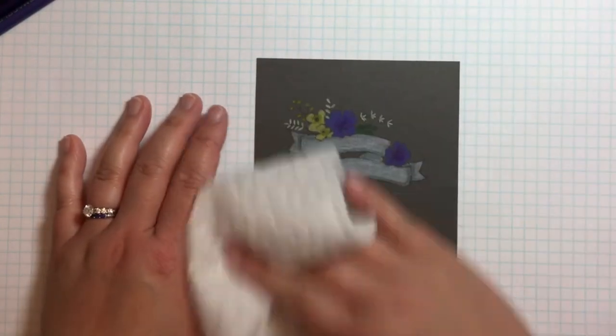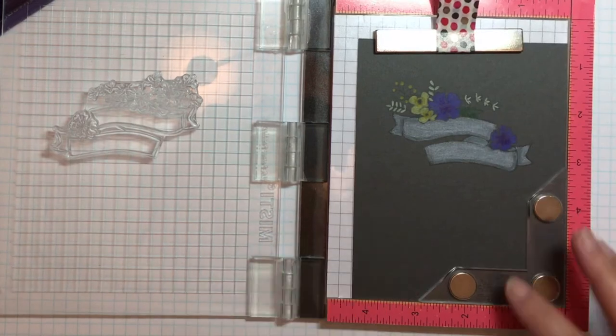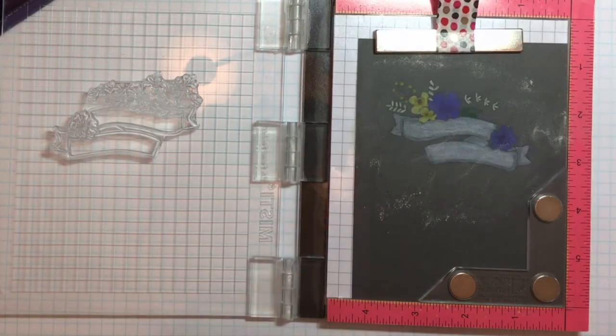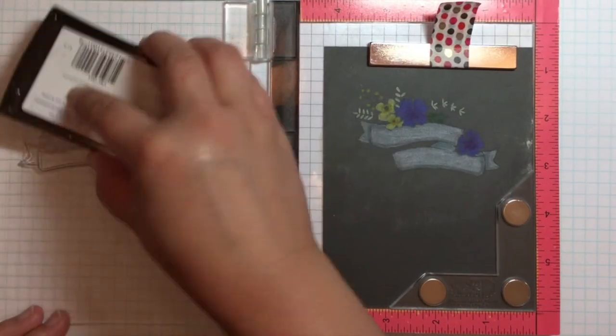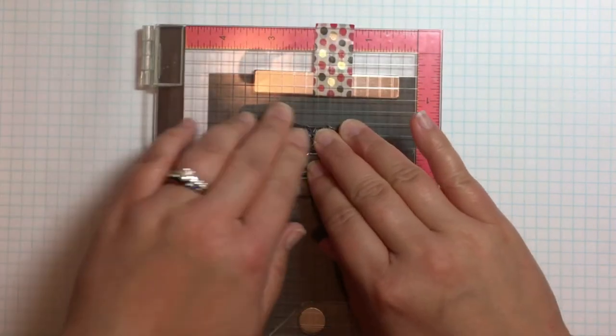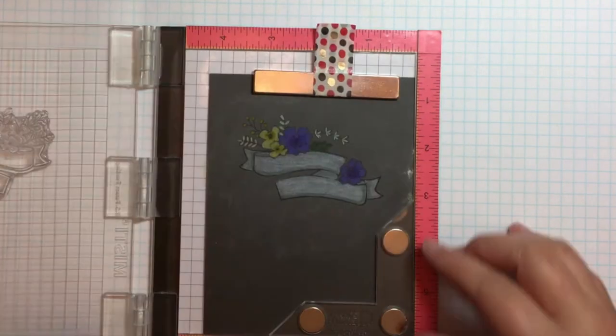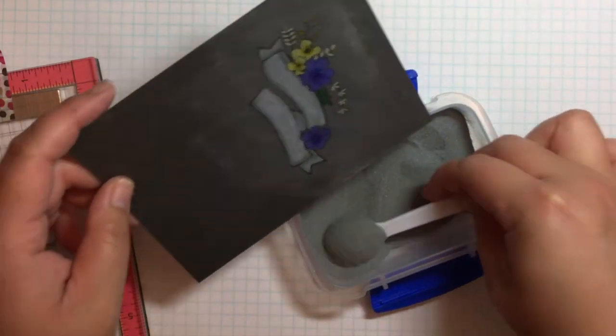Once I was done coloring, I used a Swiffer cloth to wipe away any excess colored pencil dust. I placed the panel back inside my MISTI, prepped it with a powder tool, and stamped the image again, but this time with Versamark. Then I heat embossed it with silver embossing powder.